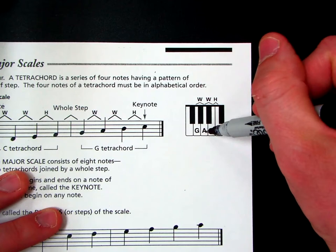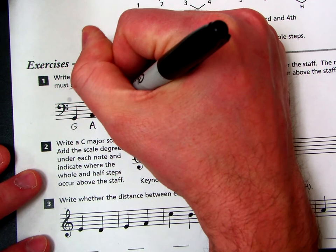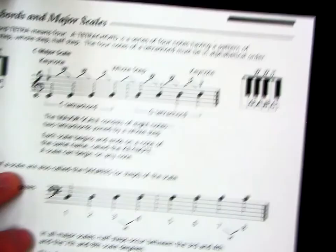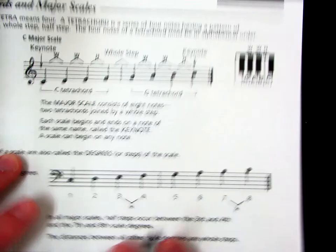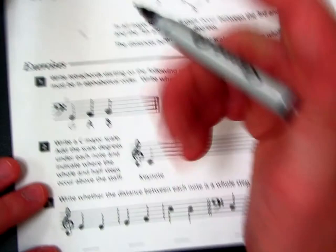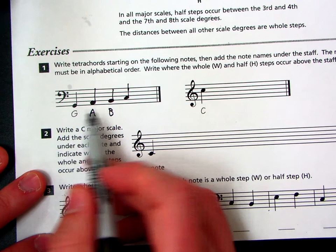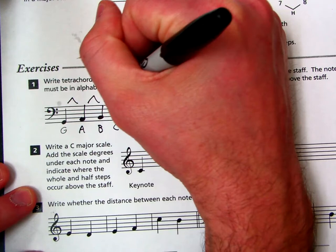I'll put that below it. We need another whole step. So from A, we can look back up here. A, one, two, that would be a B. And then we need a half step because that's the last part of it. So B, one key away, is C. Key note is G. This is a G tetrachord, final note is C. And then if we label it, we have a whole step, a whole step, and a half step.